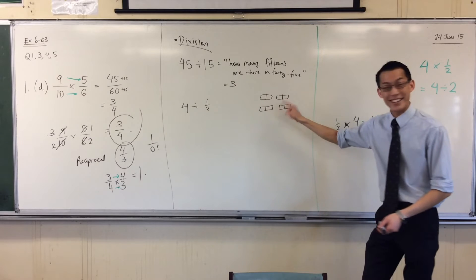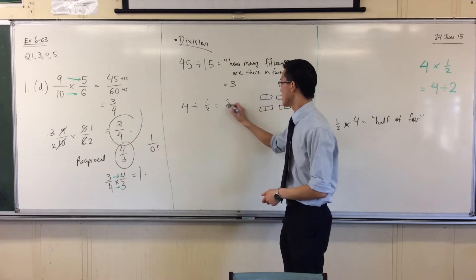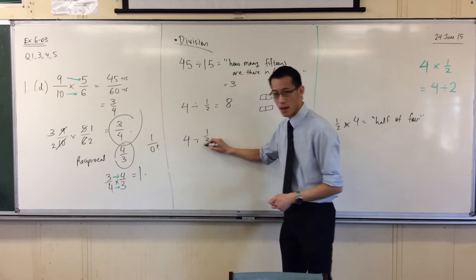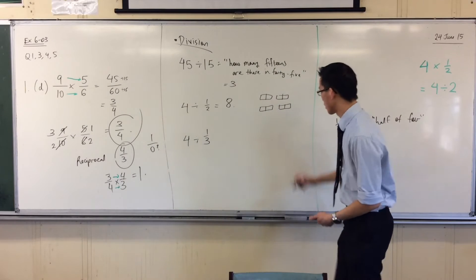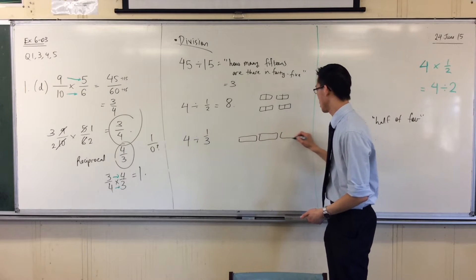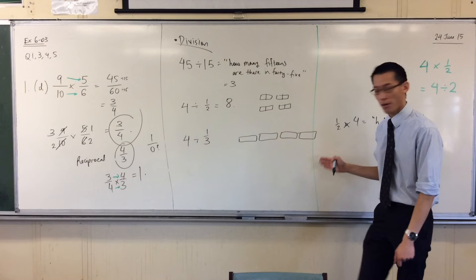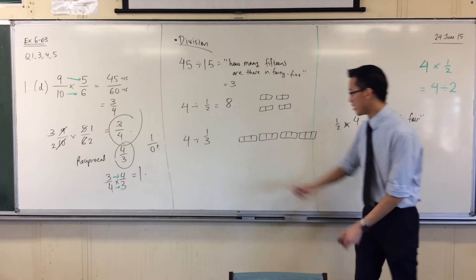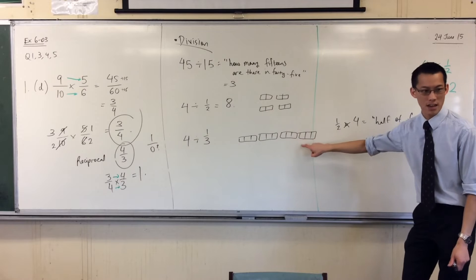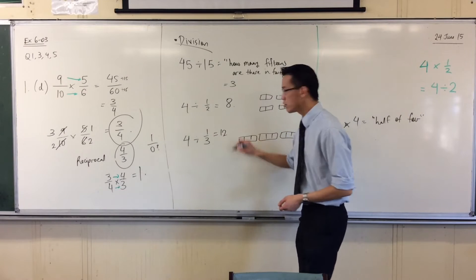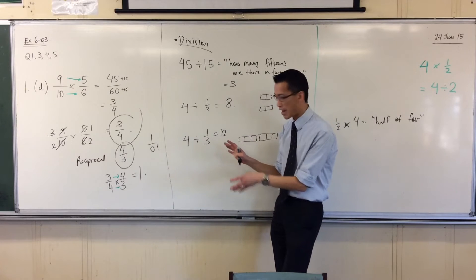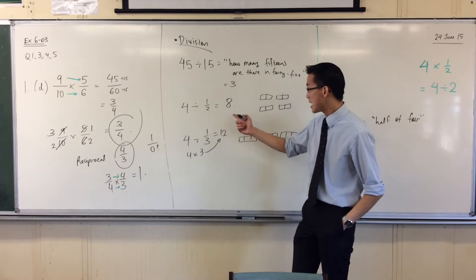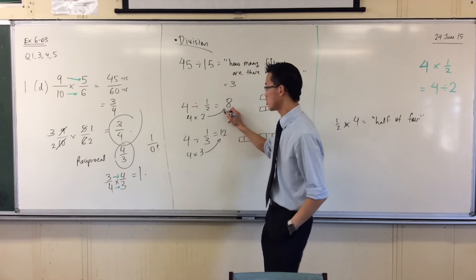And I've got 1, 2, 3, 4, 5, 6, 7, 8, right? So this is 8. In exactly the same way, I could say 4 divided by a third — that would be how many thirds are there in 4? I'll do this one across here. Here's my 4. I'll divide each one into thirds. And then you count them out: 1, 2, 3, 4, 5, 6, 7, 8, 9, 10, 11, 12. Now you should notice this 8 and 12 — it's a bit suspicious, right? 12 is exactly the same as 4 times 3, and 8 is exactly the same as 4 times 2.